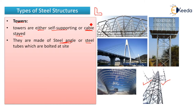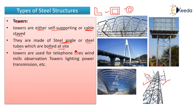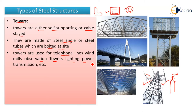Steel tubes can also be used for towers. If you are using hollow sections, for example a hollow rectangular section or a hollow circular section — but hollow circular is not preferred; hollow rectangular is preferred for towers. These tubes are bolted at the site, meaning the members are bolted together on-site. Towers are used for telephone lines, windmills, observation towers, lighting purposes, and power transmission.